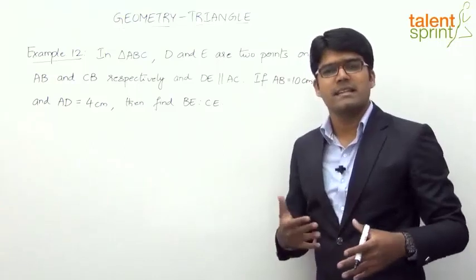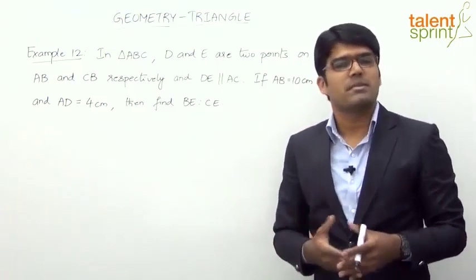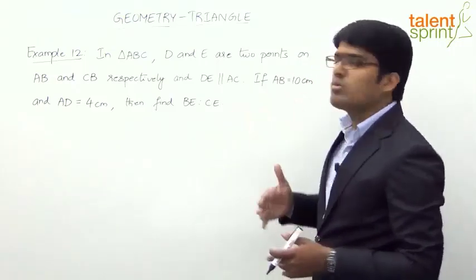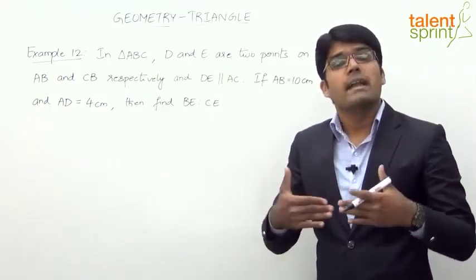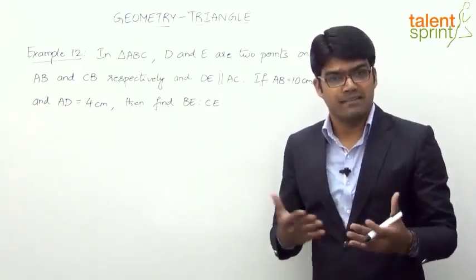Clearly by reading the question we understand that this has to be related to the basic proportionality theorem, because we talk about two points on two sides and the line joining those two points is parallel to the third side of the triangle.